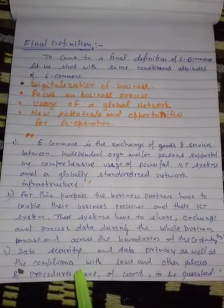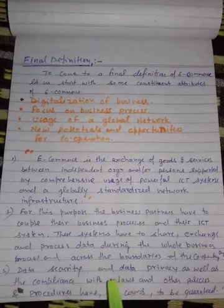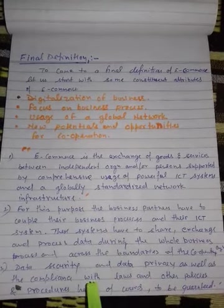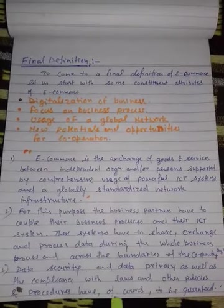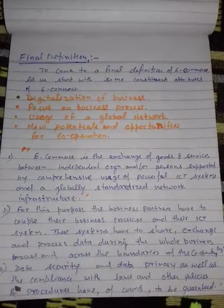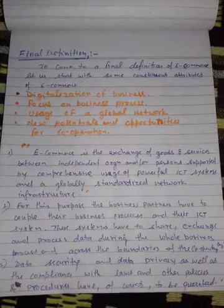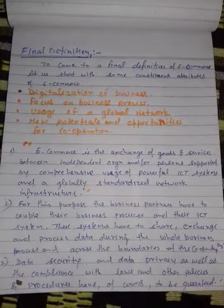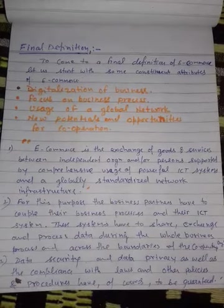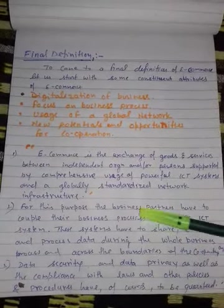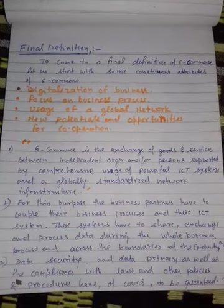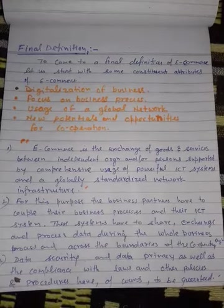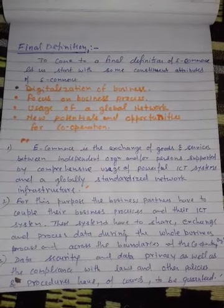The third main point is data security — it is very important in e-business and e-commerce. Security, data privacy, as well as compliance with laws and other policies and procedures have to be guaranteed for customers and business organizations. On the basis of this discussion, we can finally say that e-commerce is an activity or a process where we exchange goods and services through the internet system or by using ICT tools. Thank you.